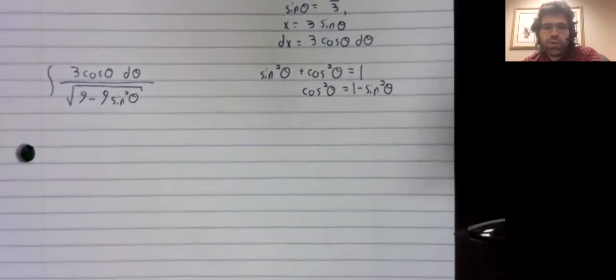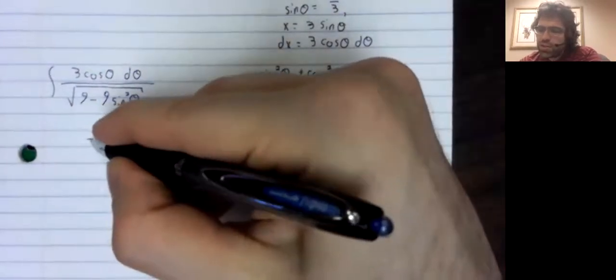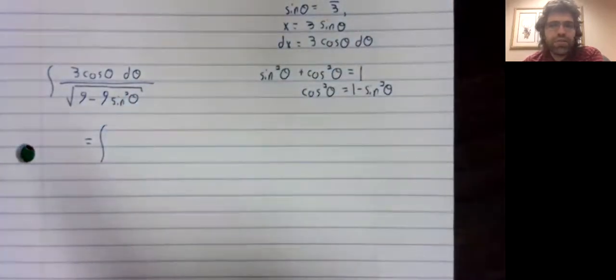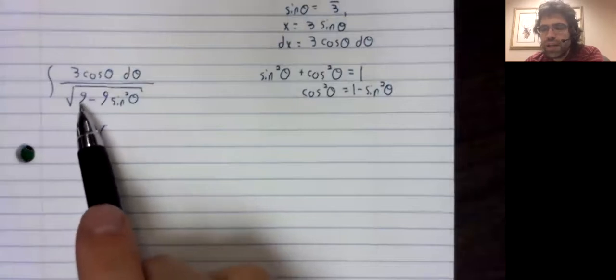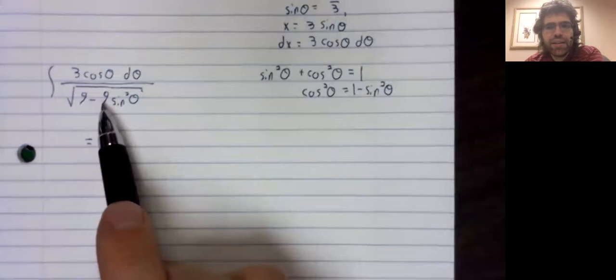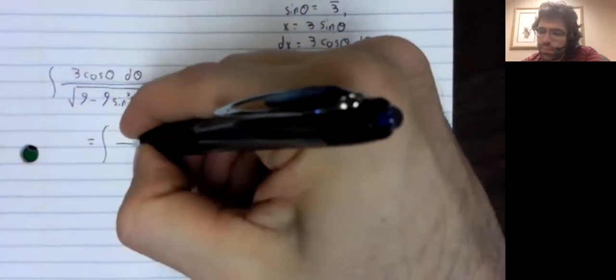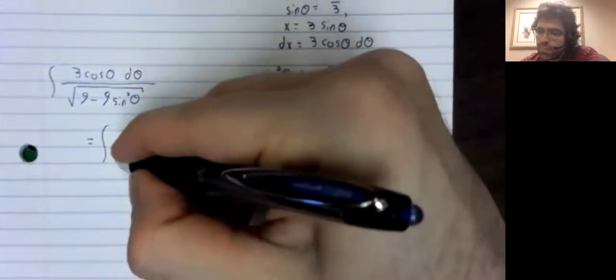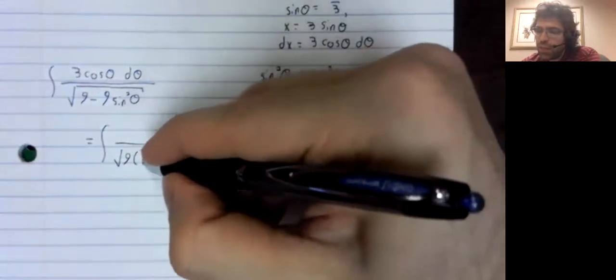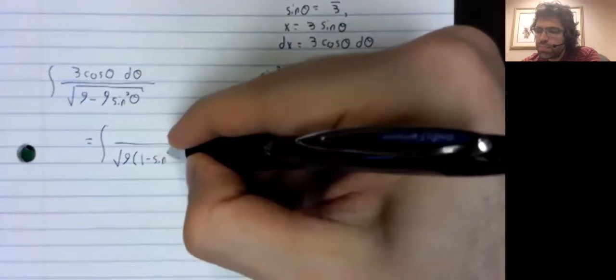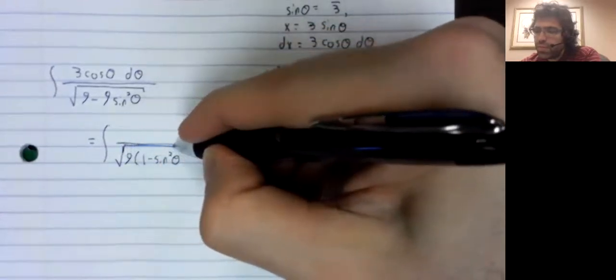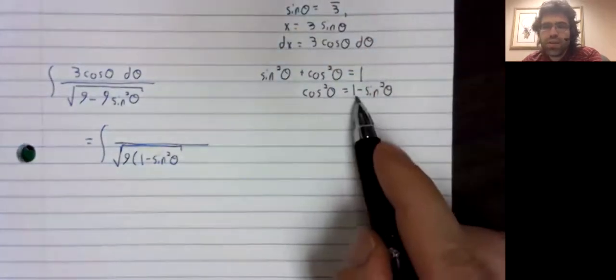What's our motivation for doing that? Well, eagle-eyed viewers may already have spotted it. We have a nine here and a nine here. So if we pull that nine out, we are left with this.